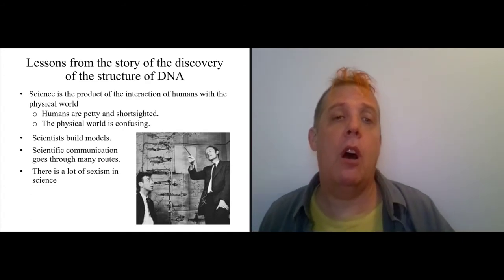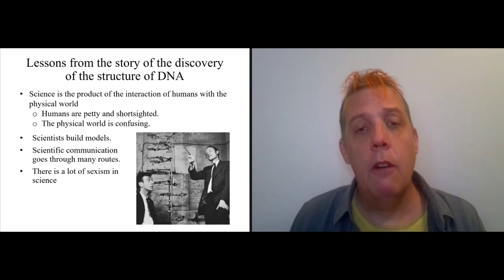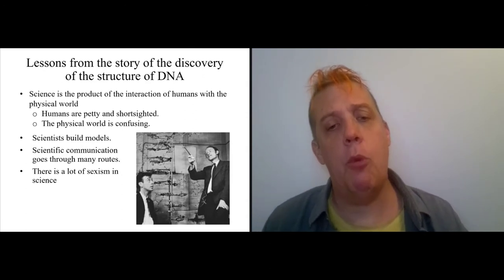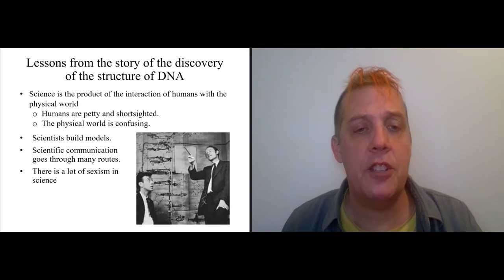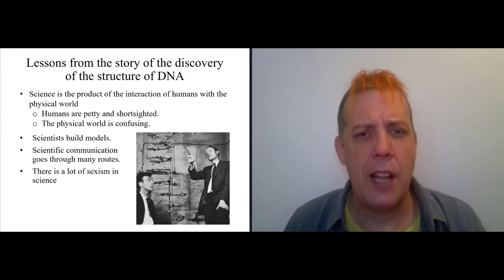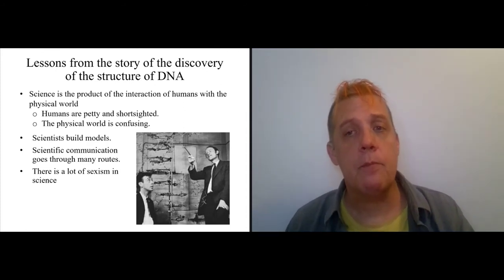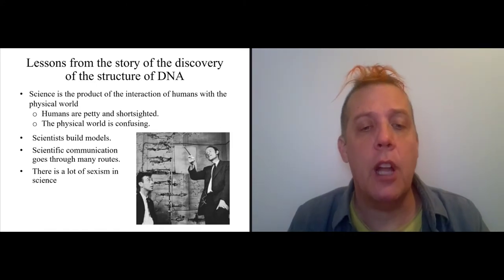The other big lesson is that scientists build models. Fundamentally, the whole predict-test-predict cycle is based around model building of one sort or another. Also, I would talk about the many routes of scientific communication. Another huge lesson from the Watson and Crick story is that there's a lot of sexism in science, and that's why Rosalind Franklin got shut out of the history books.